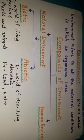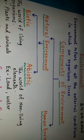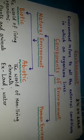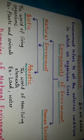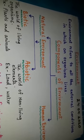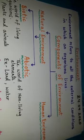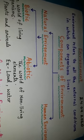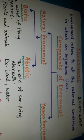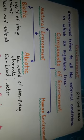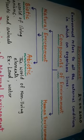In this chapter we will discuss environment and components of environment. Environment refers to all the external conditions in which an organism lives. There are two types of components of environment: natural environment and human environment.